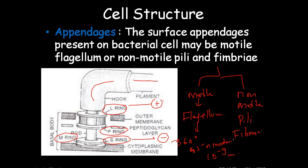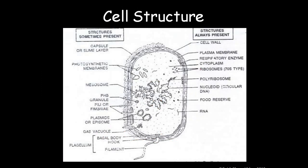This is a brief about the cell structure. For revision: some structures are only sometimes present in prokaryotic cells — slimy layer, photosynthetic membrane, biosomes, granules, pilus or fimbriae, plasmids, gas vacuoles, and flagellum. Structures always present in all prokaryotic cells include: cell wall, plasma membrane, respiratory enzymes, cytoplasm, ribosomes, polyribosomes, nucleoid, food reserves, and RNA.